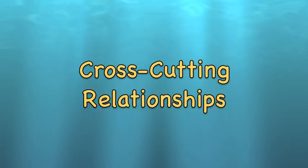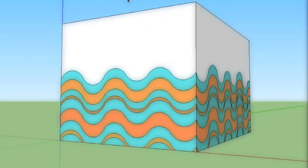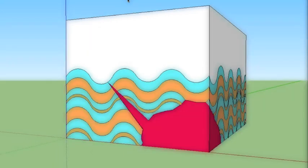Cross-cutting relationships can be used to establish the relative age of an igneous intrusion or a fault. When an intrusion or a fault is present, it tells us that the deformation must have taken place after the sedimentary beds were deposited.